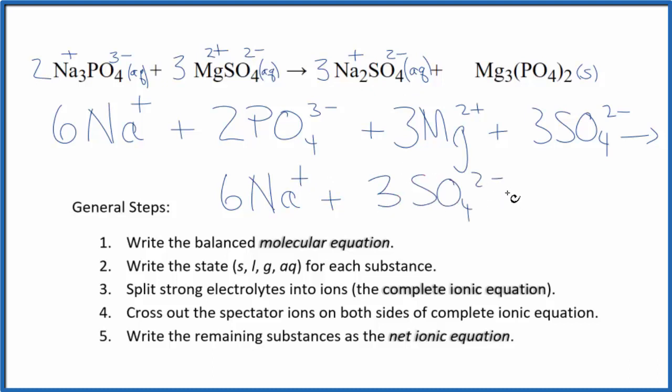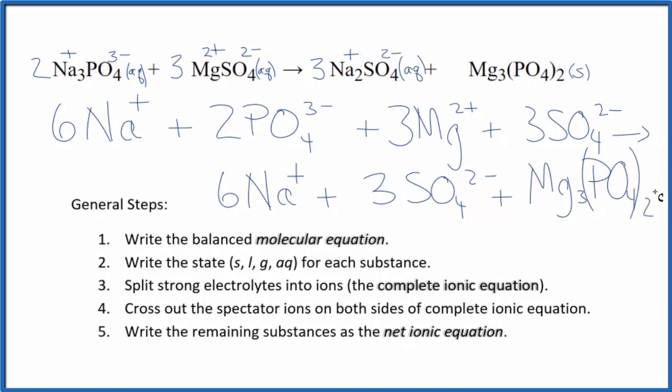And then for the magnesium phosphate, it's a solid. We don't split solids apart in net ionic equations, so it's just Mg3(PO4)2. So this is our complete or total net ionic equation for Na3PO4 plus MgSO4.